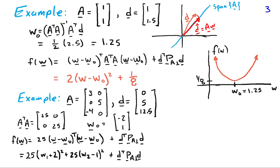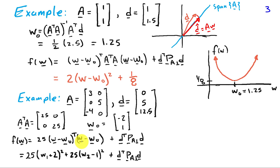Let's extend this to a two-dimensional example for w. Suppose A is the matrix indicated here and d = [0, 5, 12.5]. If I look at AᵀA, it ends up being 25 and 25 on the diagonal and 0 on the off-diagonal. So in this case w has dimension p = 2, making AᵀA a 2×2 matrix. The optimum solution w₀ is [−2, 1], and f(w) = 25(w − w₀)ᵀ(w − w₀) plus our error squared term.